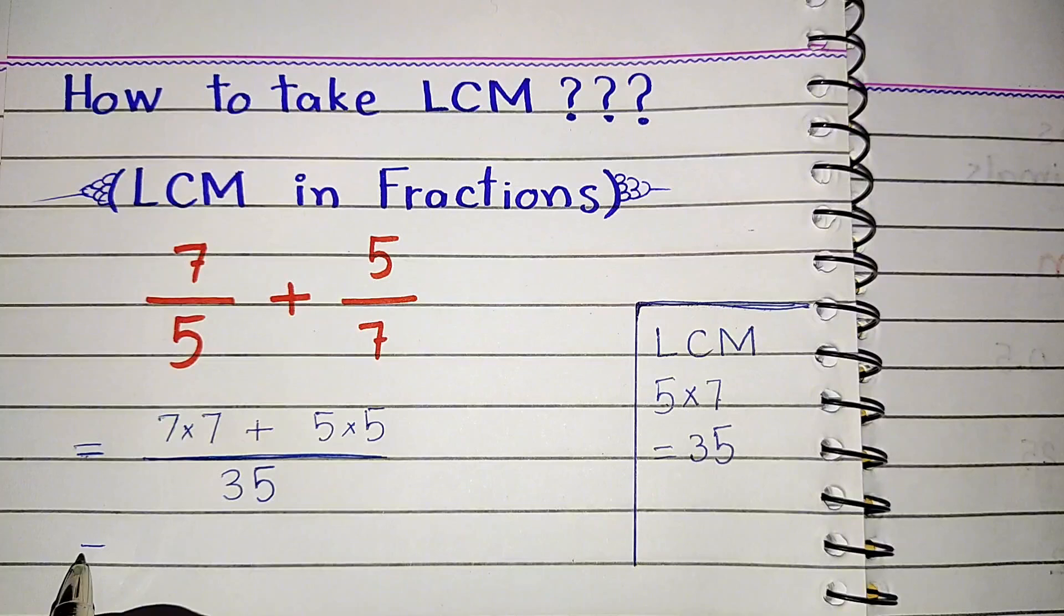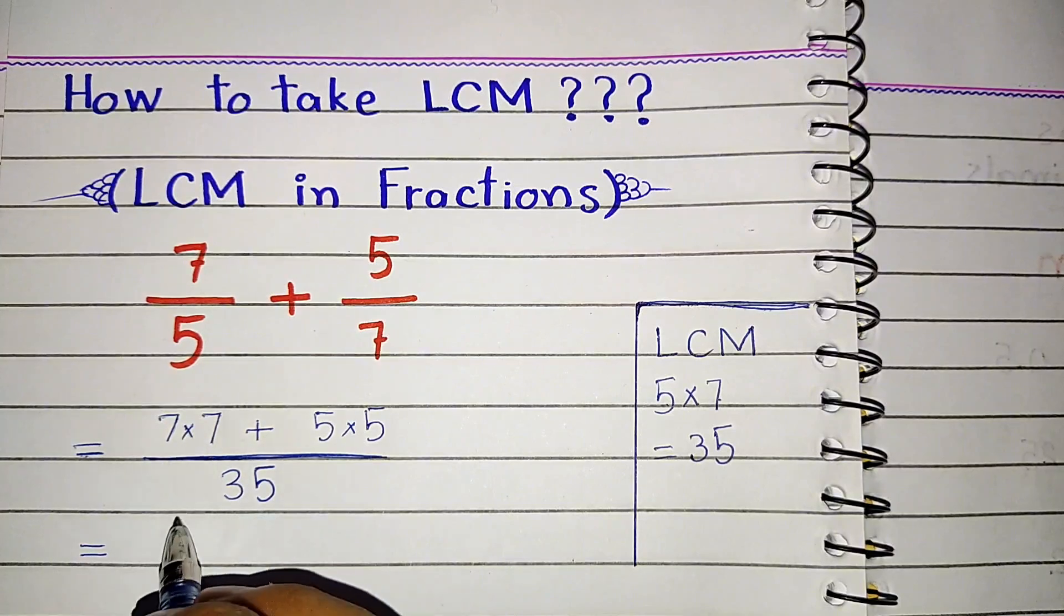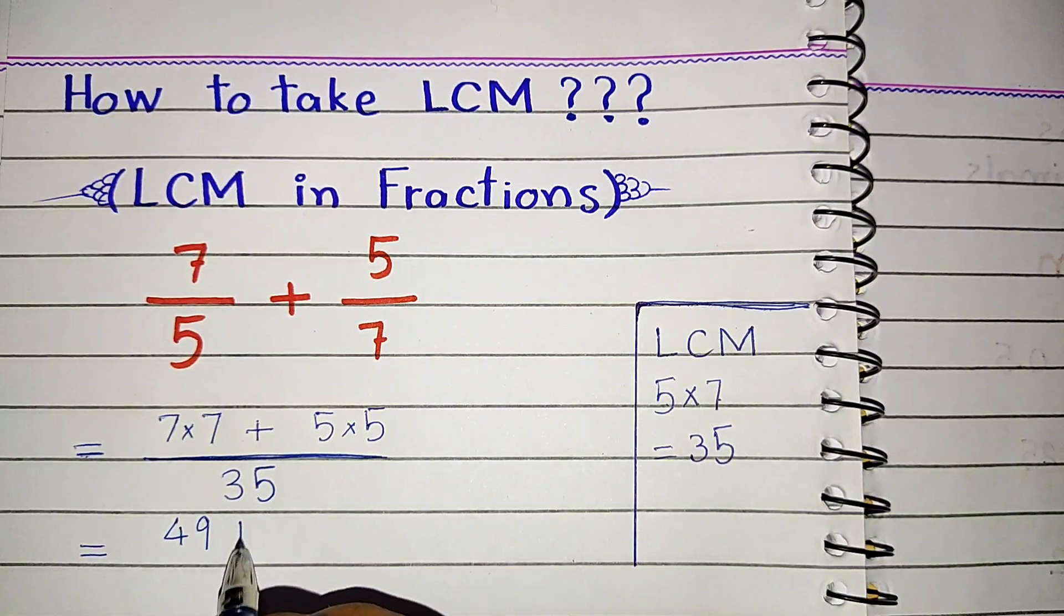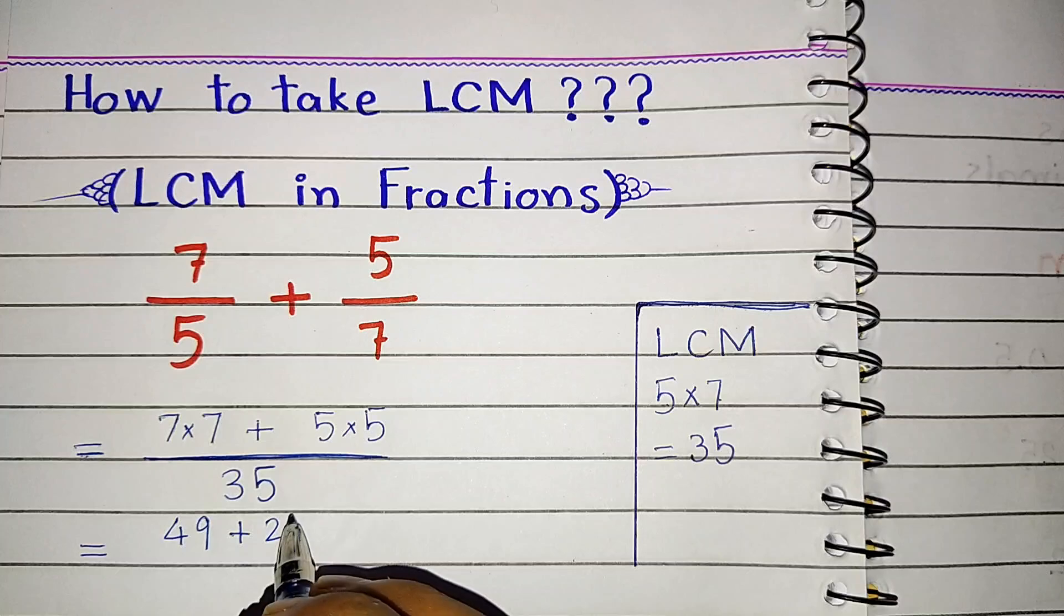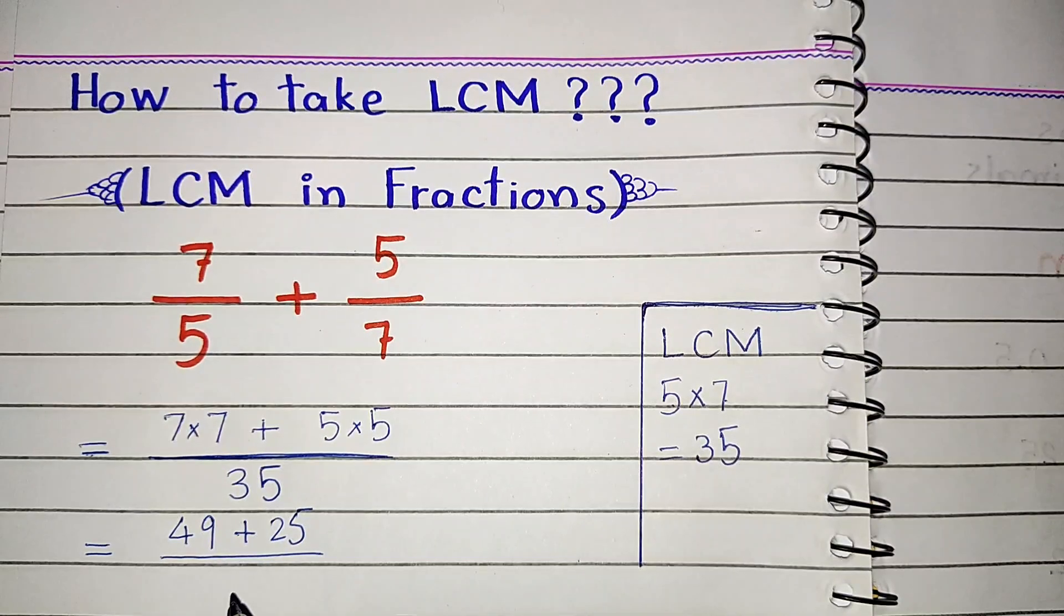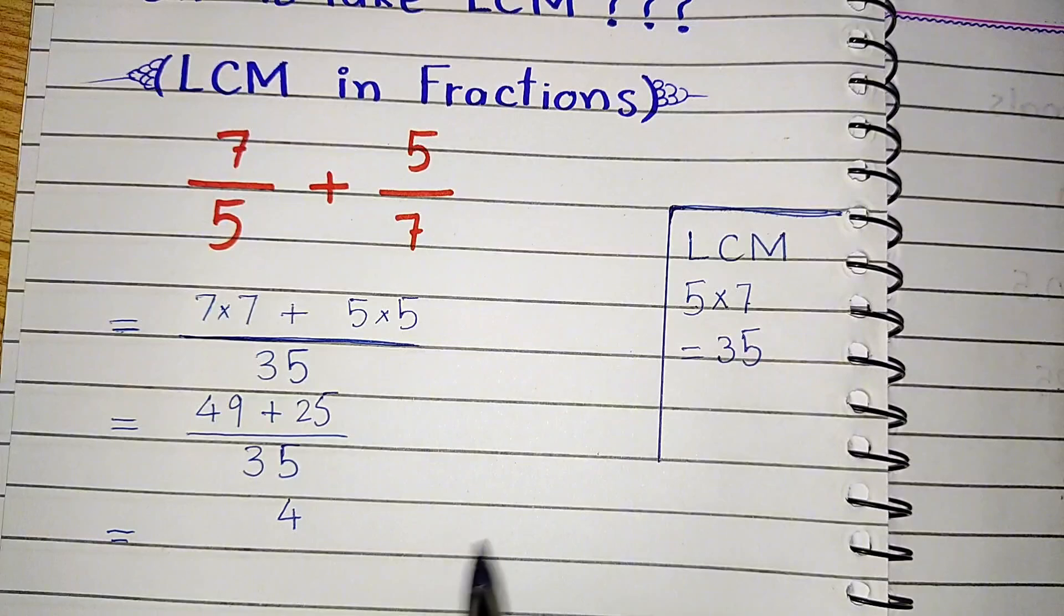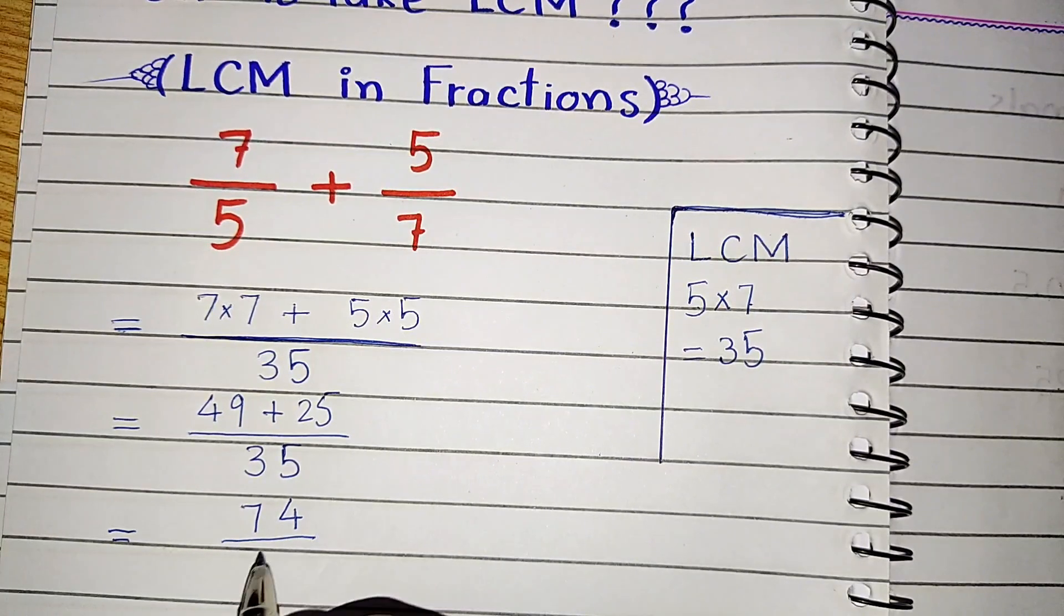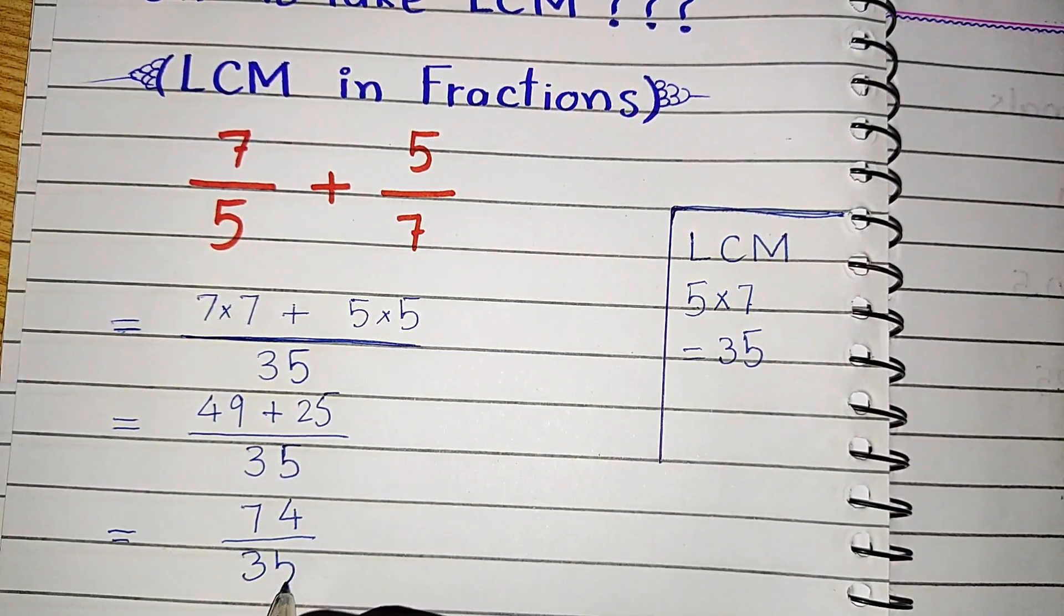Now you can multiply and simplify the answer. 7 times 7 is 49 plus 5 times 5 is 25. Now you can add this number and our denominator will be 35. We have 74 divided by 35. This is our final answer. Thank you.